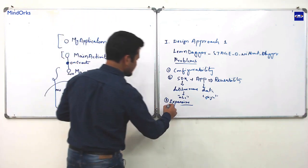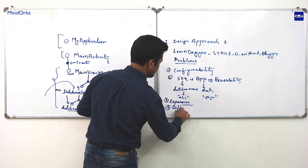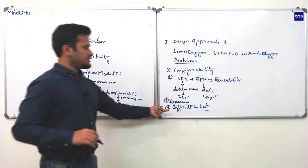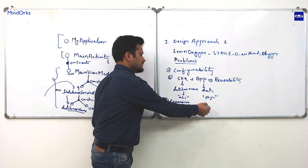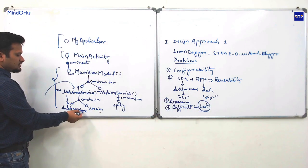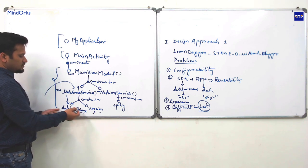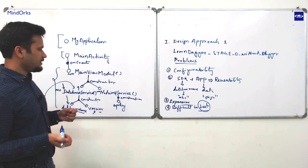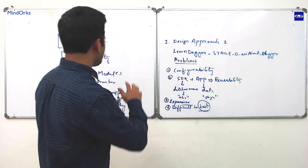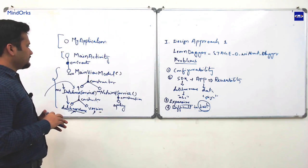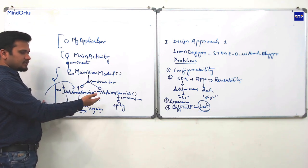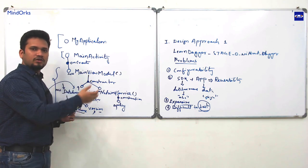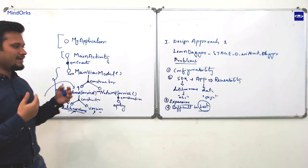One more problem: this design is difficult to test. In testing, we try to provide different configurations — for example, different database names — to verify the class works properly. With this approach, that's difficult. Now we will try to solve all these problems with a better design. This is why it's important to understand how and where we are creating instances — this is what managing dependencies means.